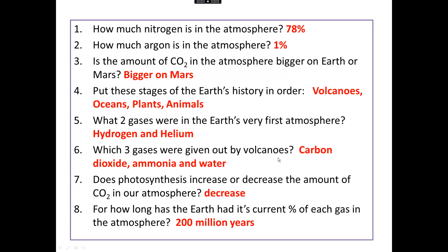Volcanoes gave out carbon dioxide, ammonia and water. Photosynthesis decreases the amount of CO2 in the atmosphere. Plants take in CO2 for photosynthesis. And the Earth has had its current percentages of the atmosphere gases for 200 million years. But please remember the Earth is 4.6 billion years old.